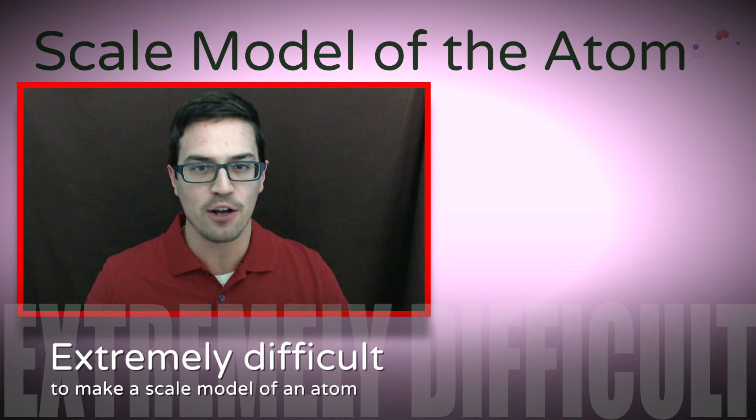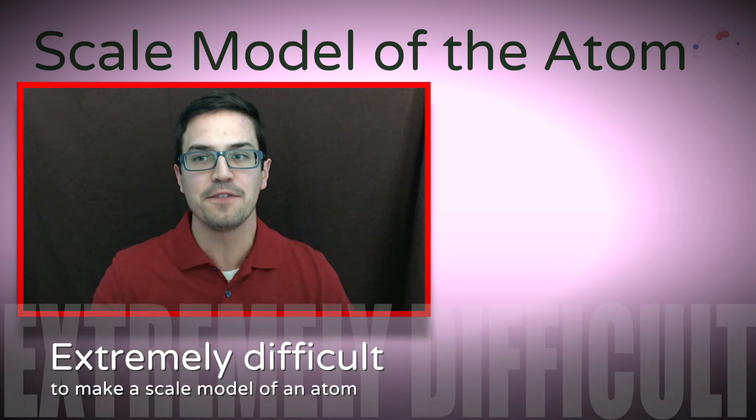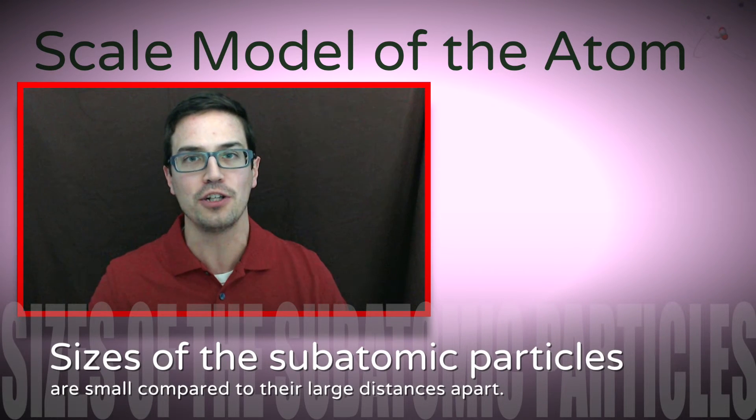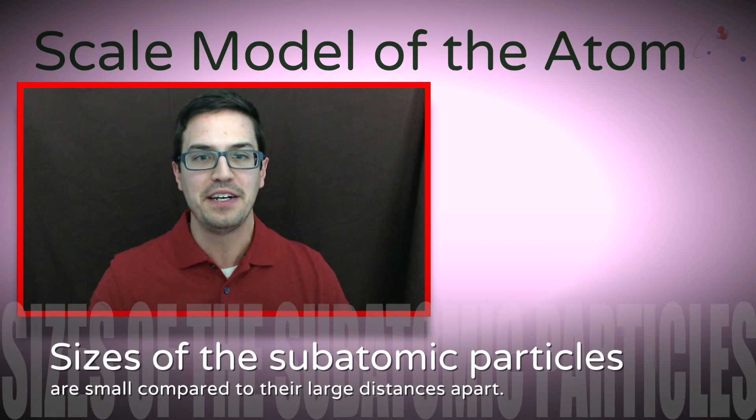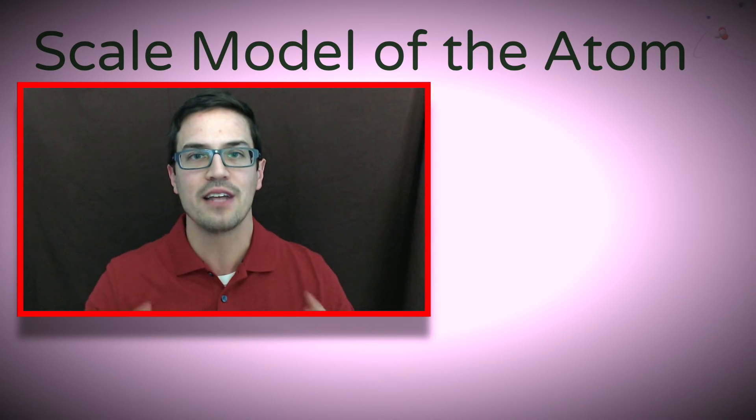Now let's think about the arrangement of the atom. It is extremely difficult to create a scale model of an atom. The reason for this is that the relative sizes of each subatomic particle is dramatically smaller than the distances between the nucleus and the electrons.